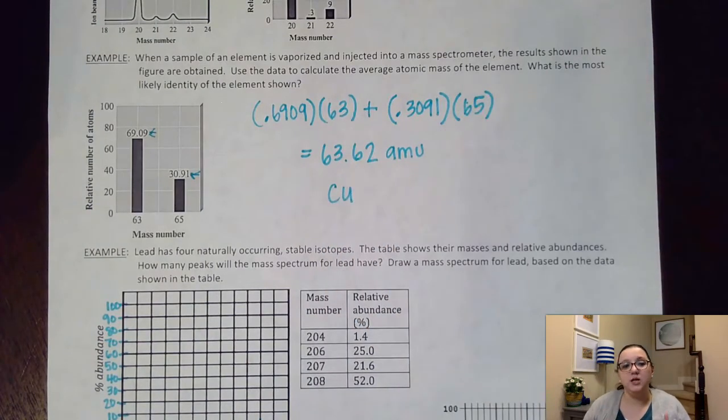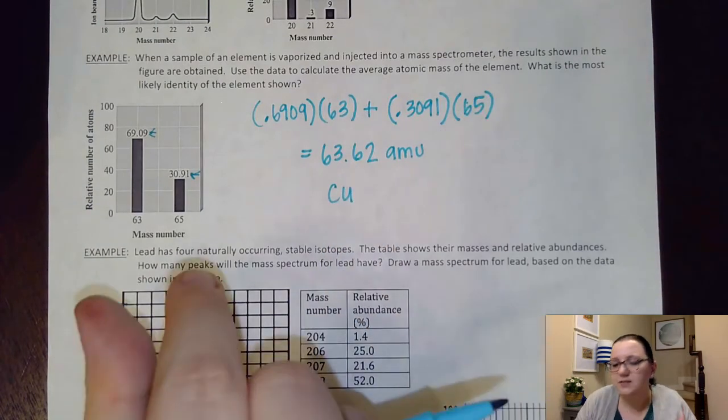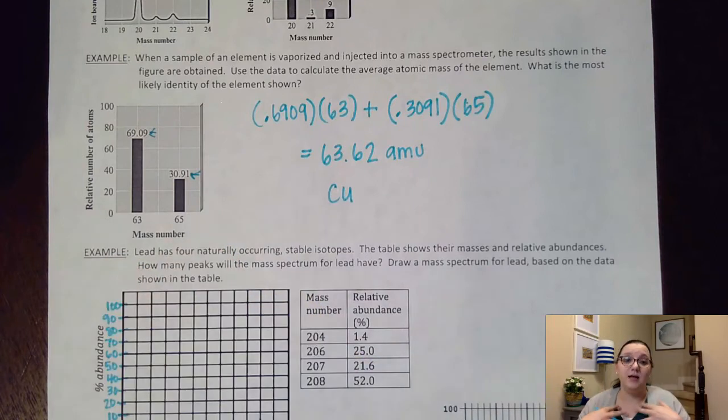But the reason why it doesn't match up exactly is because this information is only for my sample. And the data on the periodic table is for samples all over the earth. So just keep in mind that this may not perfectly match up with something on the periodic table, but it should be really close. Okay? Now, I've kind of pre-done a little bit of work on this one.